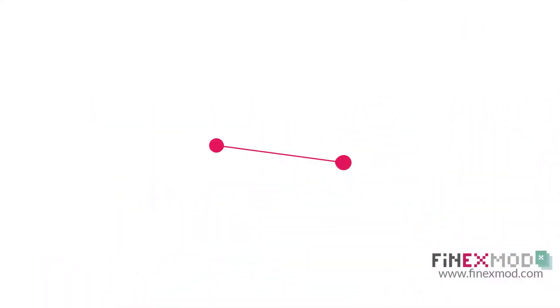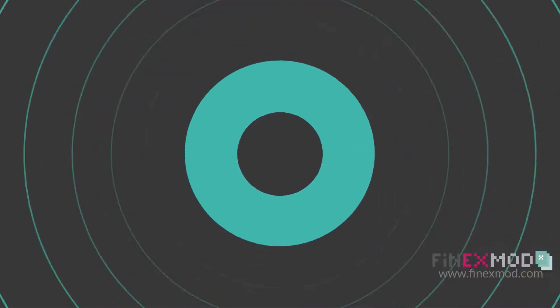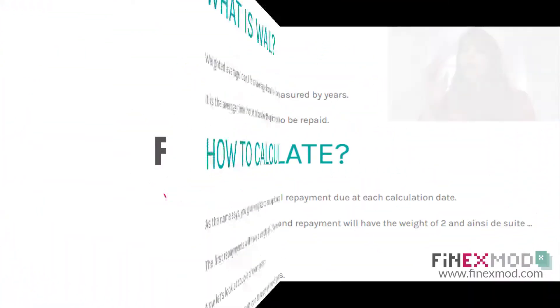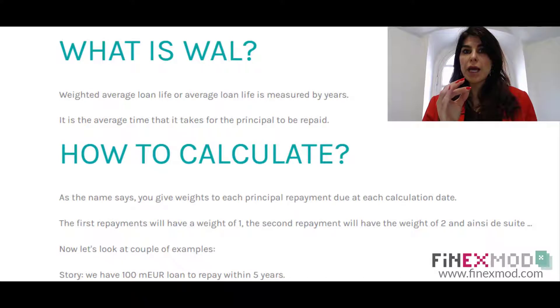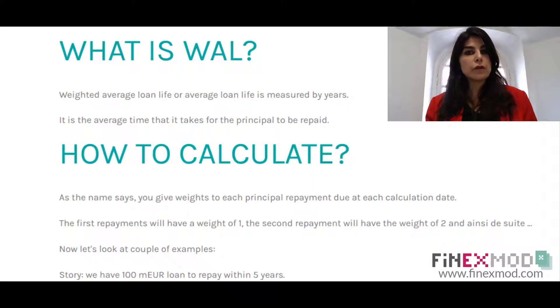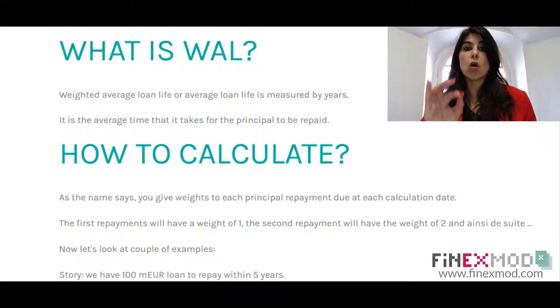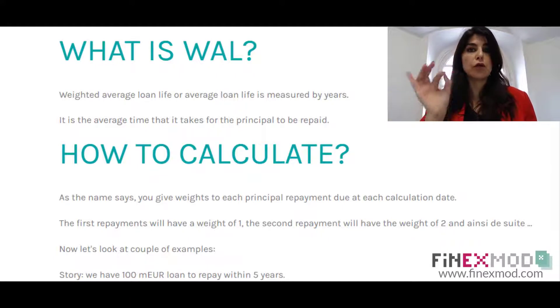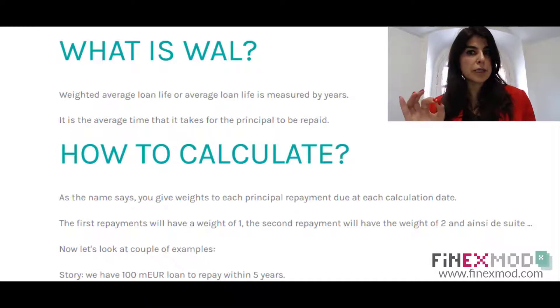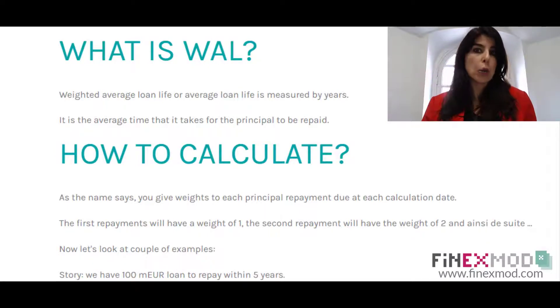This video is about weighted average loan life in a project finance transaction. The definition of weighted average loan life is the average time that it takes to repay the principal of the loan. The unit of measurement of the average loan life is the number of years — that's how we express it.